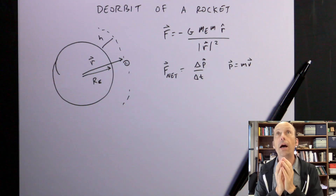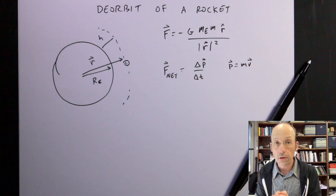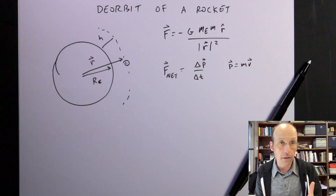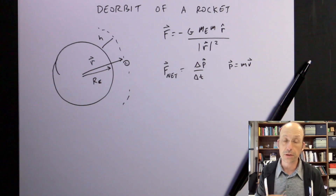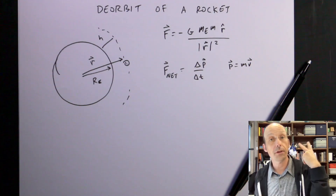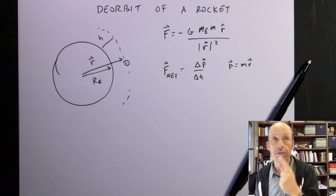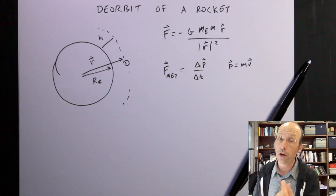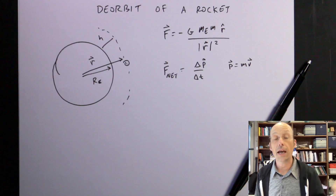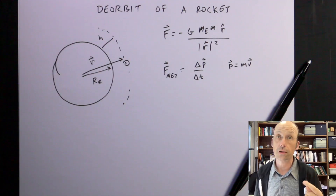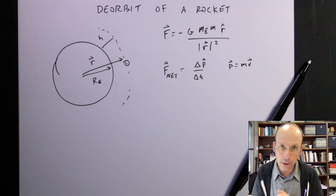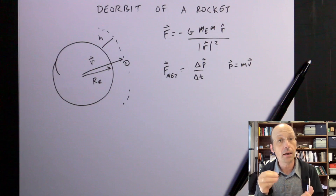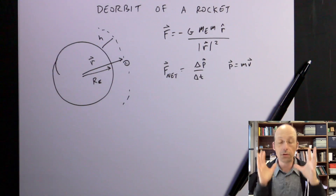What I want to do is to build a numerical model in Python for this re-entry situation. We're going to deal with two forces: the gravitational force on the rocket and the air-resistant force on the rocket. It can be pretty complicated, but if we break it into simple steps, we can do it.